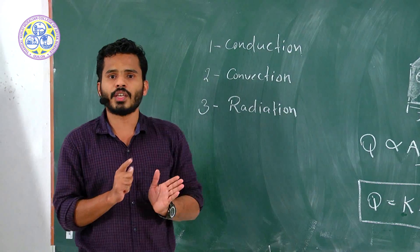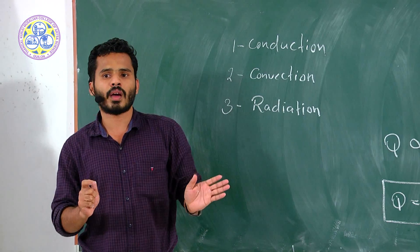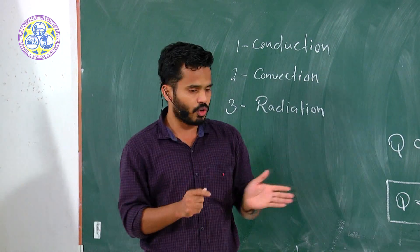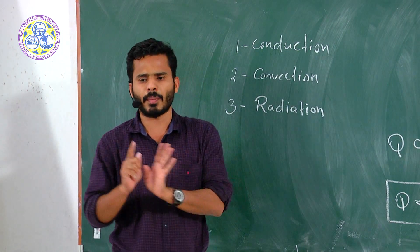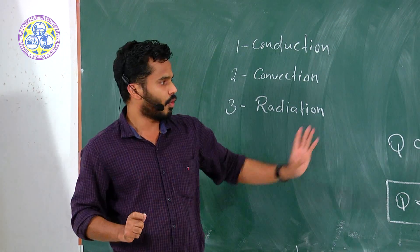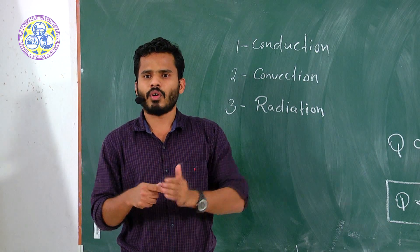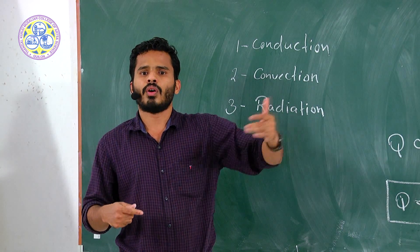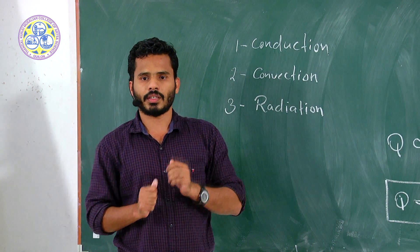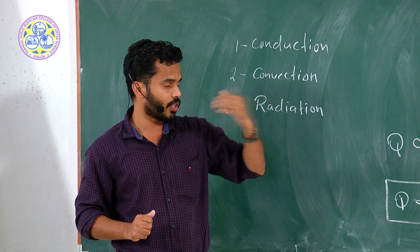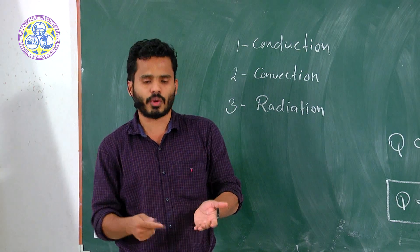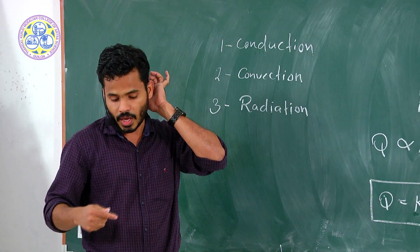Some materials are good conductors and some are poor conductors. For example, metals are very good conductors of heat, while wood, ebonite, and some other materials are bad conductors. Depending on these properties we use them for different purposes.